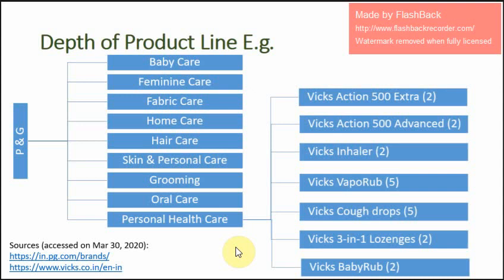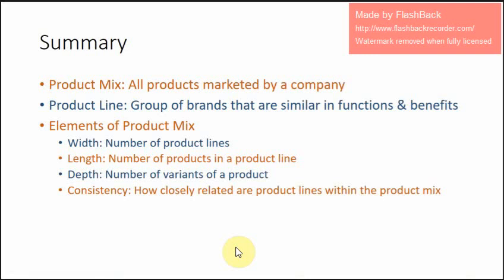In summary: product mix is all the products marketed by a company. Product line is a group of brands that are similar in functions and benefits to the consumer. There are four elements of product mix — width, which means number of product lines; length, which means number of products in a product line; depth, which is number of variants of a product; and consistency, which means how closely related product lines are within the product mix.